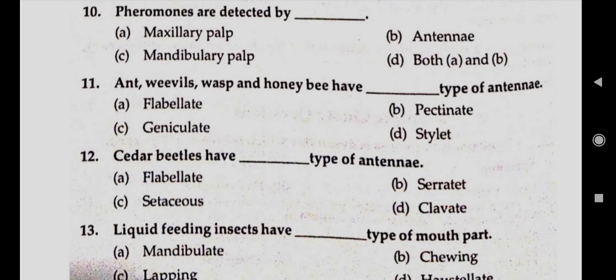Question number ten: pyramids are detected by answer D, both A and B — A means maxillary palp, B means antenna. Question number eleven: wasps and ants have dash type of antenna. Answer C, geniculate. Question number twelve: cedar beetles have dash type of antenna. Answer A, flabellate.